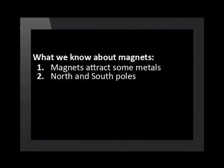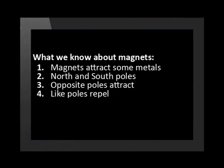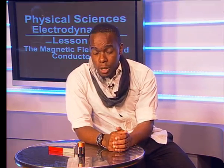Magnets attract some metals. They have two opposite poles — a north and south pole. Opposite poles attract and like poles repel one another. Magnets have magnetic field lines. Some of these ideas are a little difficult to see, so let's do an experiment to show the special properties of magnets.